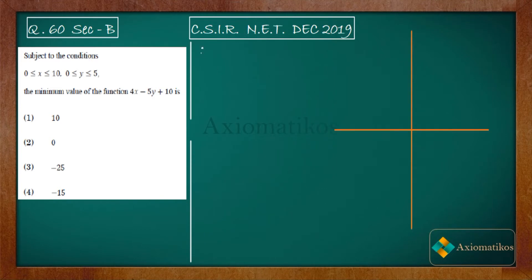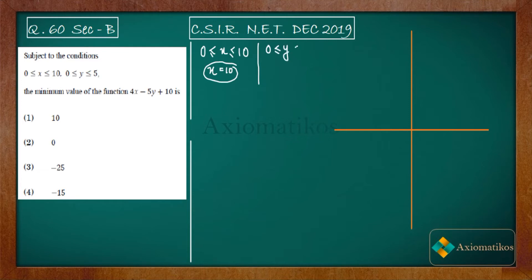We have the constraint that x is greater than 0 and less than or equal to 10, so one equation to draw on the graph is x equals 10. We also have the constraint that y is greater than 0 and less than or equal to 5, so we need to draw y equals 5 on the graph.